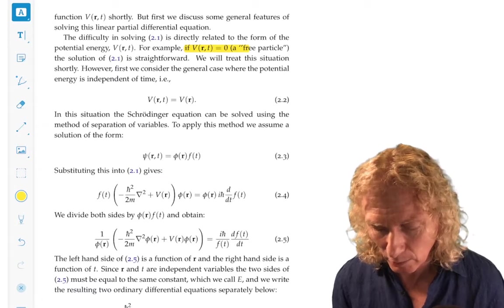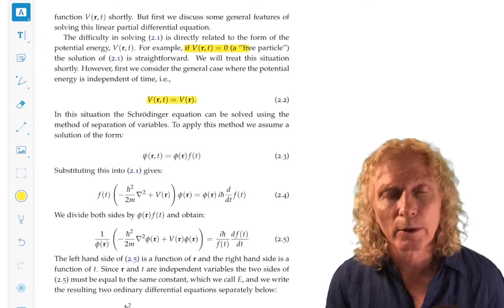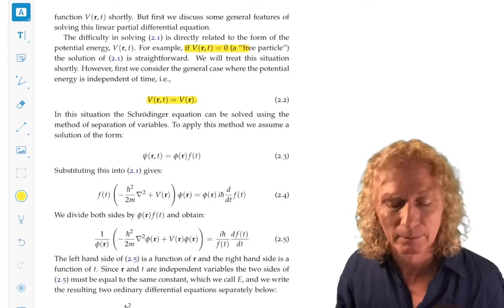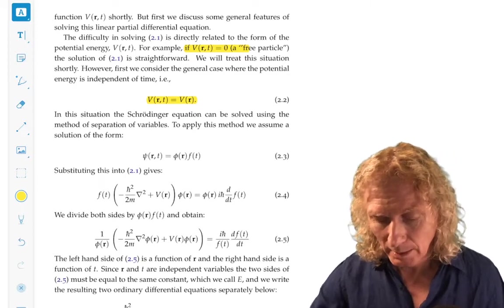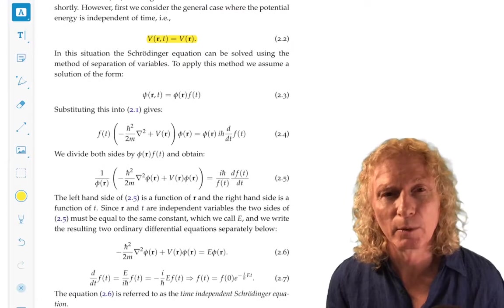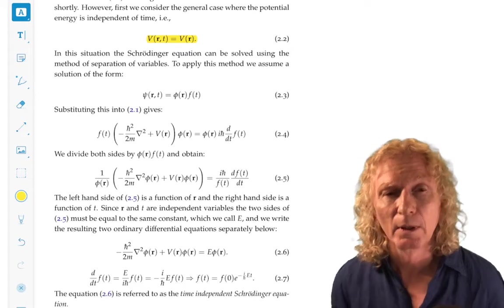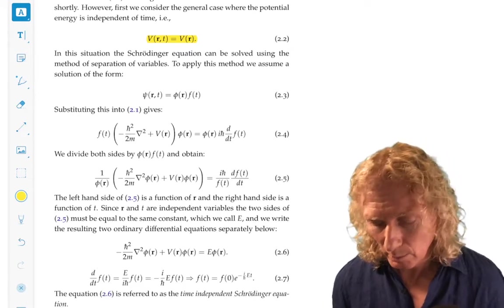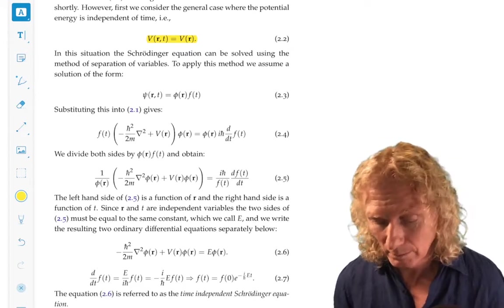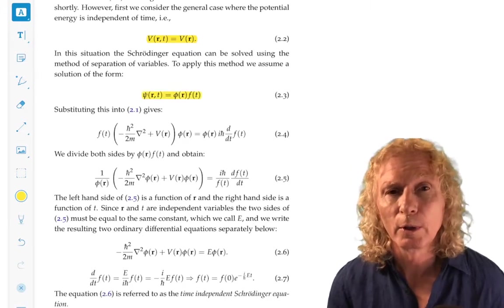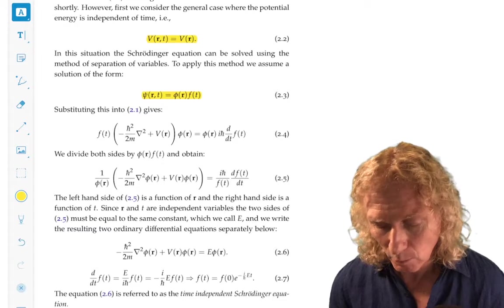But in general, we're going to consider the potential energy independent of time. The case when it depends on time is important and interesting, but this is the place we start. In that case, the Schrödinger equation can be expressed in terms of separation of variables in a nice form.